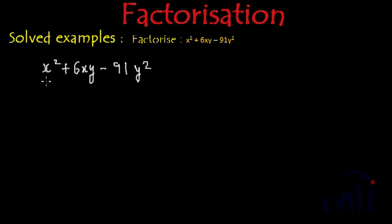Yes, we multiply the coefficients of x squared and y squared. This will be equal to 1 multiplied by minus 91. This will result in minus 91, right?